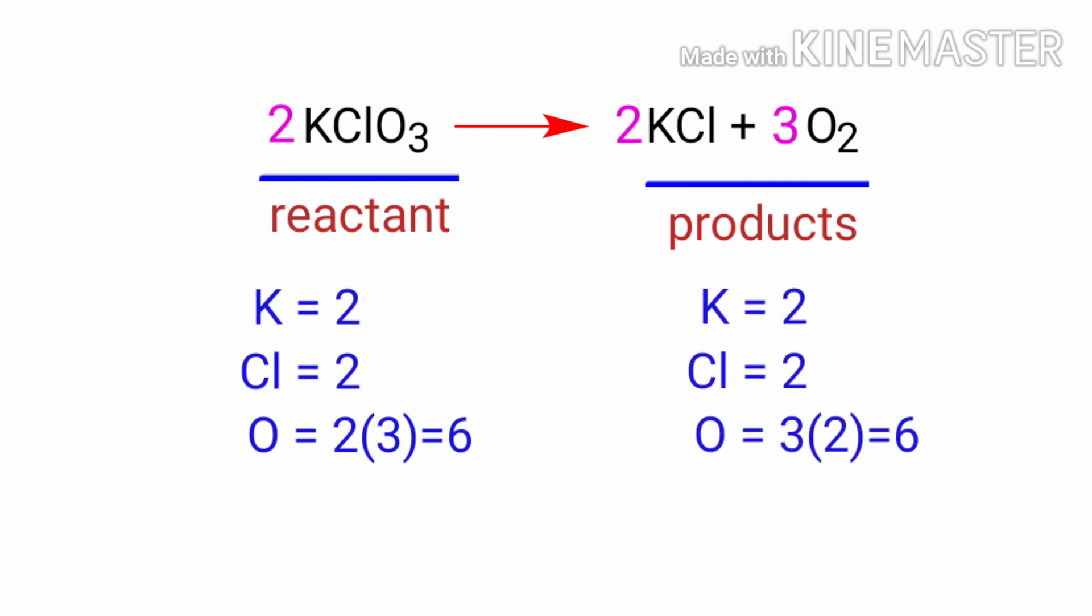The equation is now balanced. There are two potassium atoms, two chlorine atoms and six oxygen atoms on both sides.